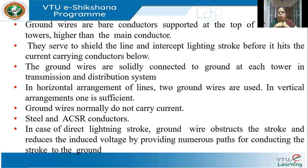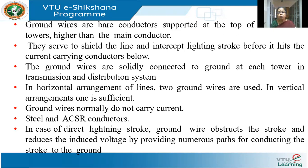The ground wires normally do not carry any current. They only act as a path to discharge any lightning strike. Steel or ACSR — aluminium conductor steel reinforced — can be used for ground wires. When lightning strikes directly, the ground wire obstructs the stroke and reduces the induced voltage by providing numerous paths for conducting the stroke to the ground, thus protecting the line.